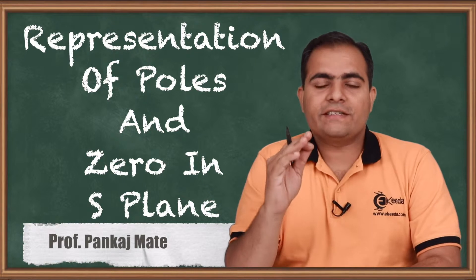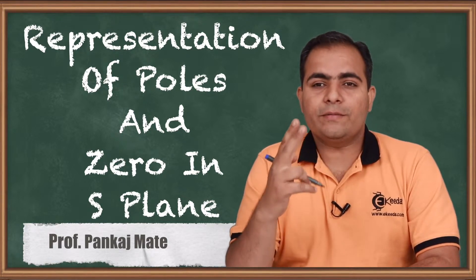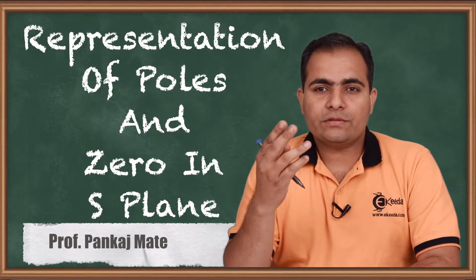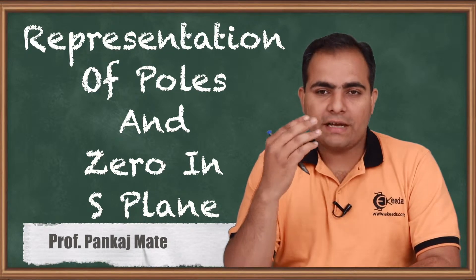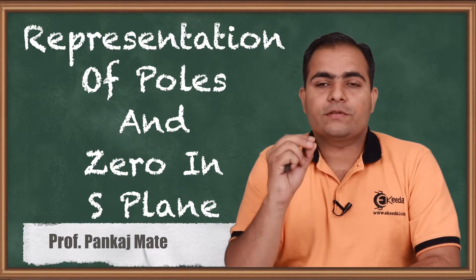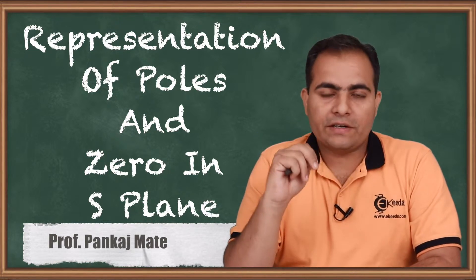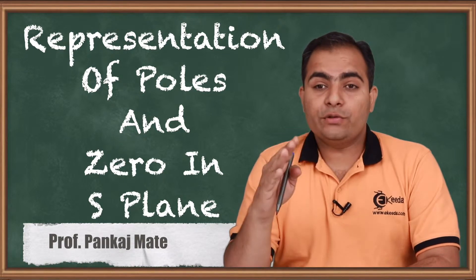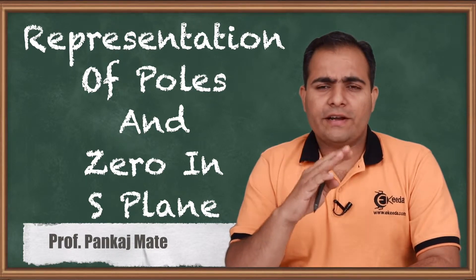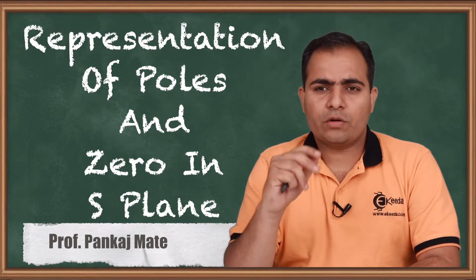Whenever any function is given, it consists of two parts. The first one is the zeros of that function and the other one is the poles. Poles are more important because they decide the stability of the function, whereas zeros are useful in filters — for finding which type of filter a function represents.